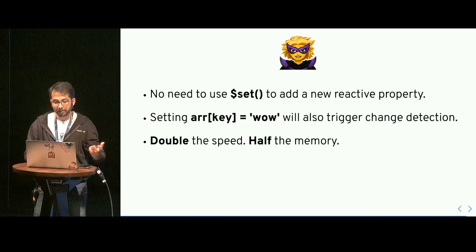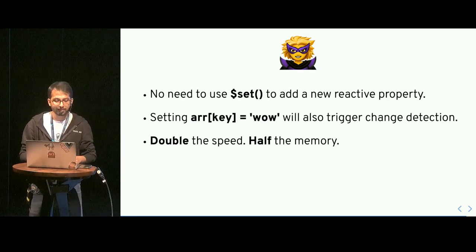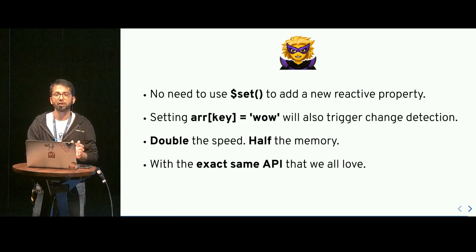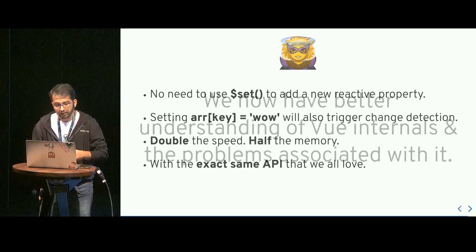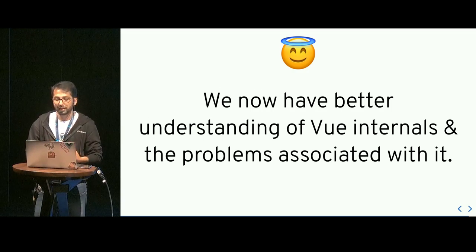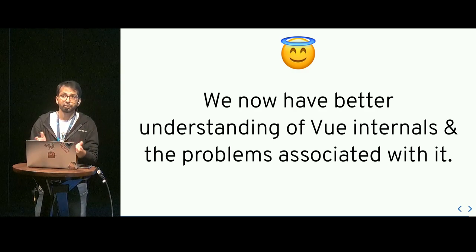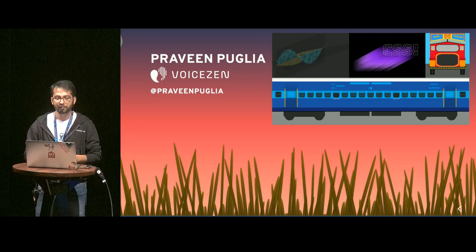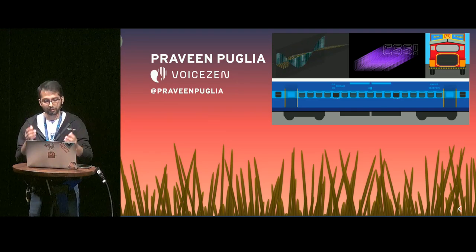The new Vue reactivity system built on ES6 proxies doubles the speed compared to Vue 2.x. And the best part in the Vue ecosystem is that the API remains the same — you don't have to change your user-land code and all these improvements come under the hood. Hopefully today we now have a better understanding of Vue internals and the problems associated with it, which should help you write better, more robust components and make it easier to debug Vue apps. Thanks so much — feel free to reach out on Twitter, LinkedIn, or in the open space.